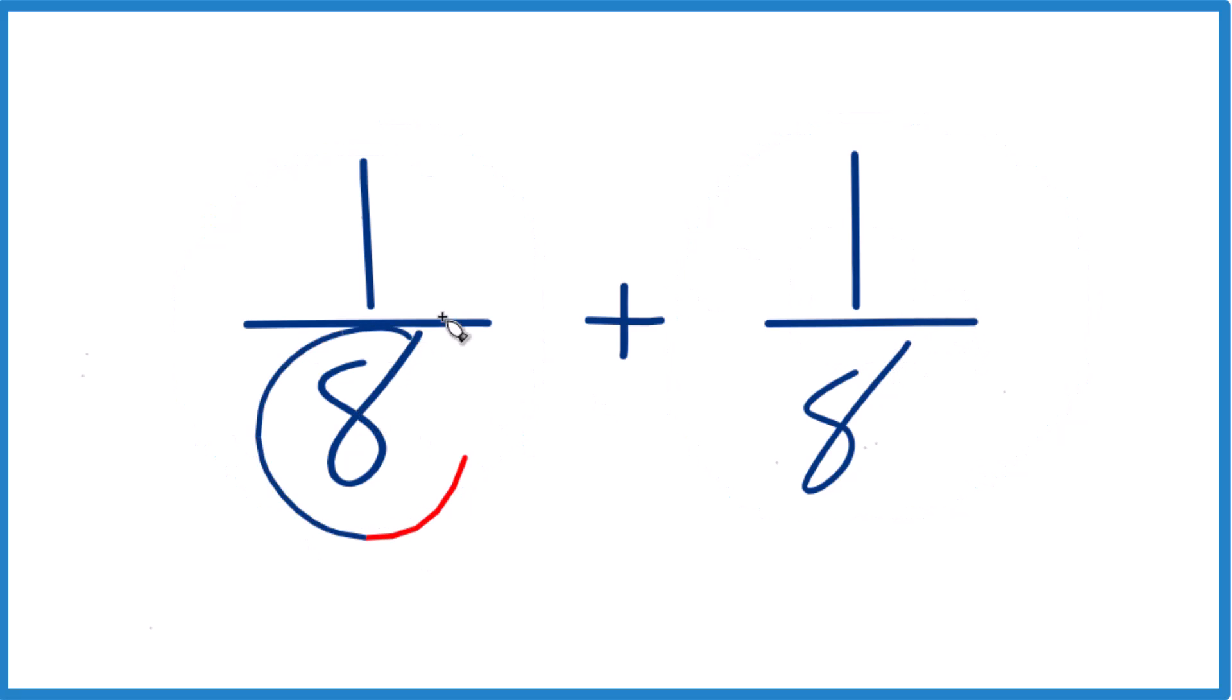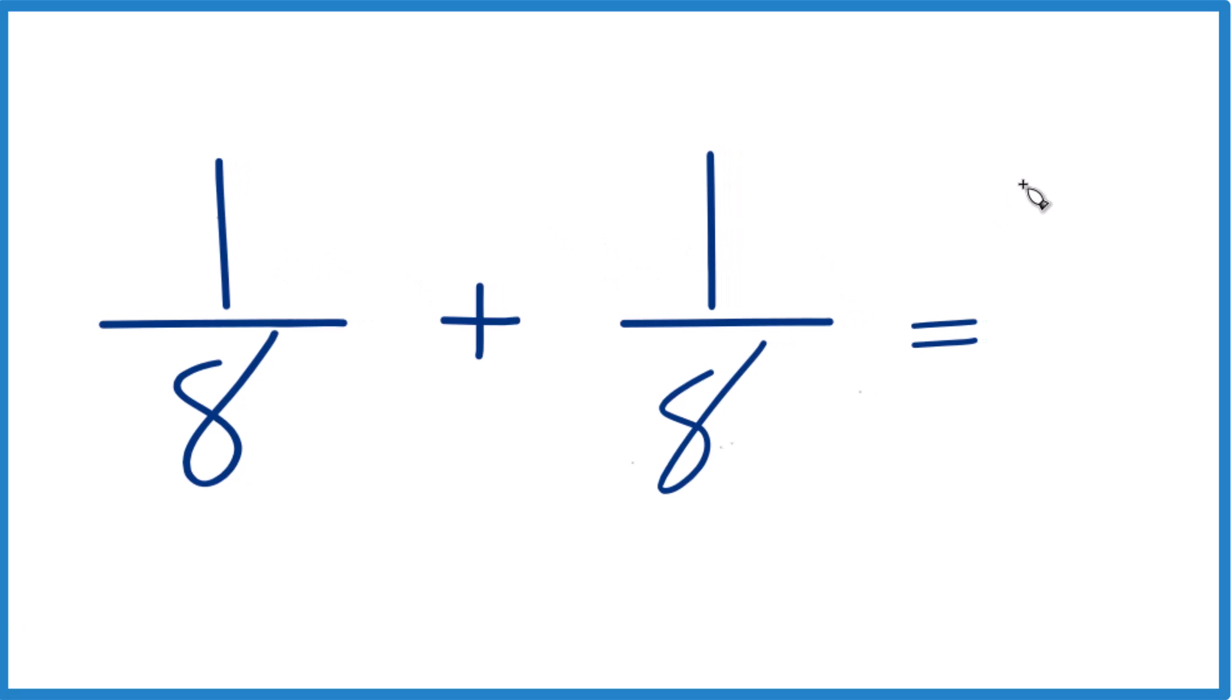When you have the same denominator, so this is a common denominator, all we have to do is add the numerators and bring the denominators across. So 1 plus 1 is 2, and we just keep the 8 the same.